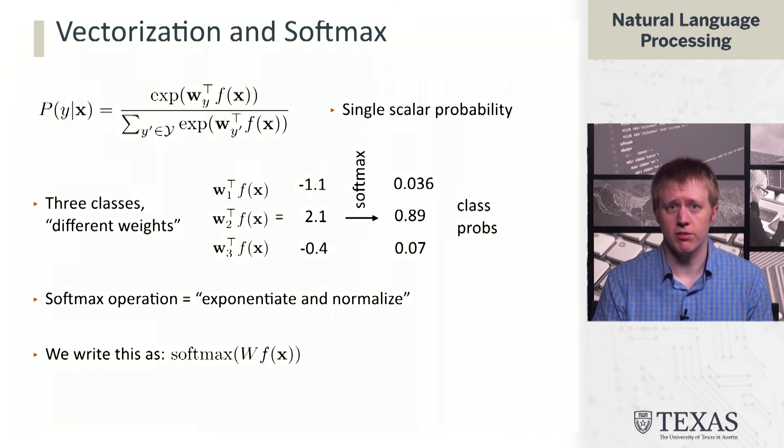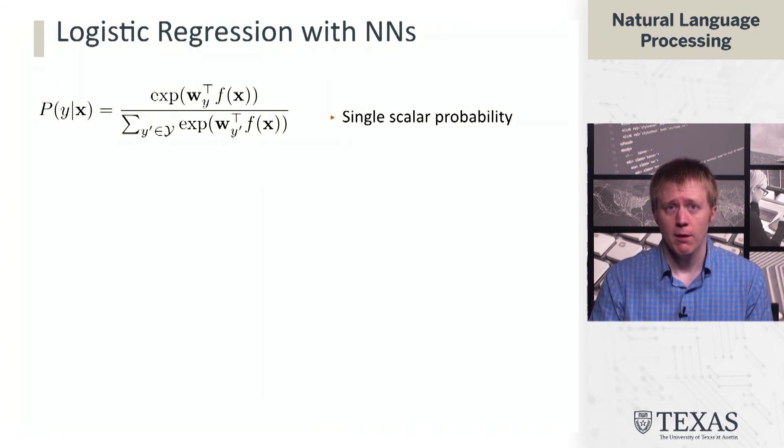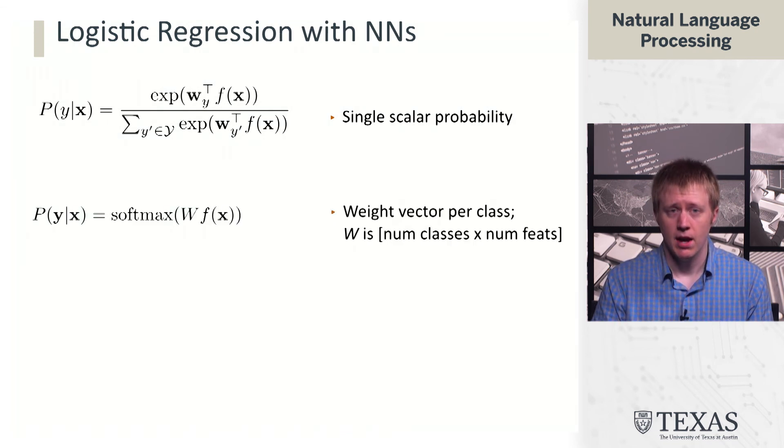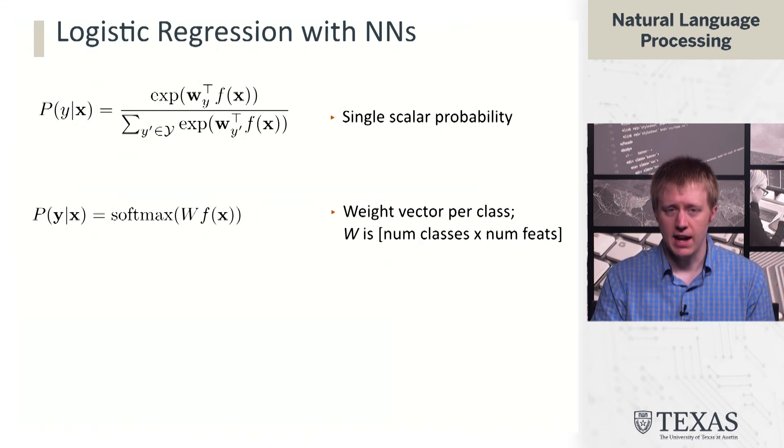We've stacked each of these vectors of class weights, w1, w2, w3, into a single matrix. Now we can express this whole operation as multiplying that matrix by the feature vector, and then softmaxing it. The weight matrix is num classes by number of features, and the output now is a vector of probabilities, capturing the probabilities for all the classes.